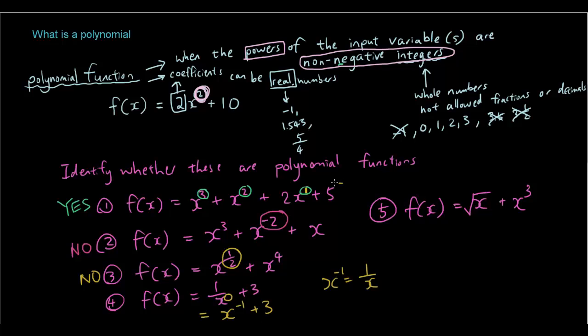So, this can actually be rewritten as x to the power of negative 1 plus 3. By the way, the constant terms, they are allowed in a polynomial. So these are okay. These are okay. But, we have a negative power here. So, this is not a polynomial.